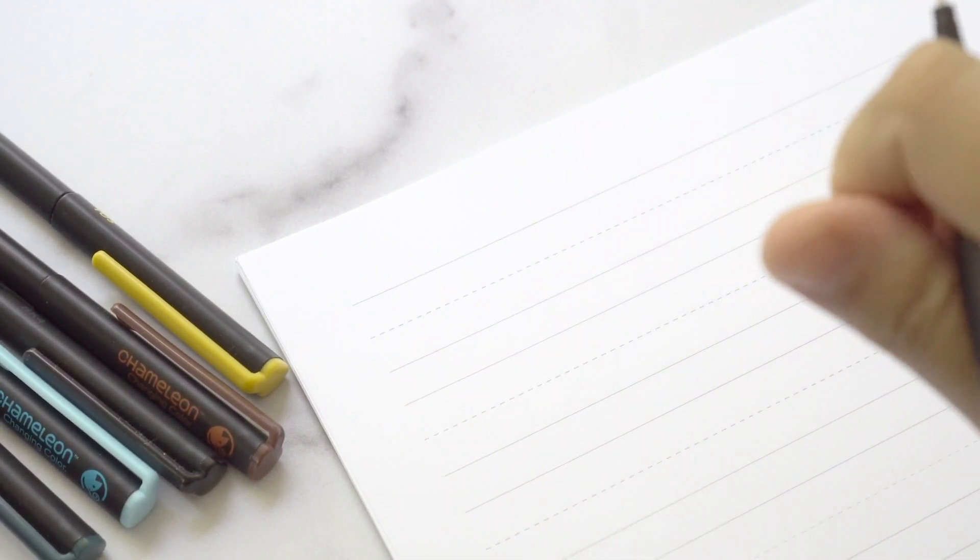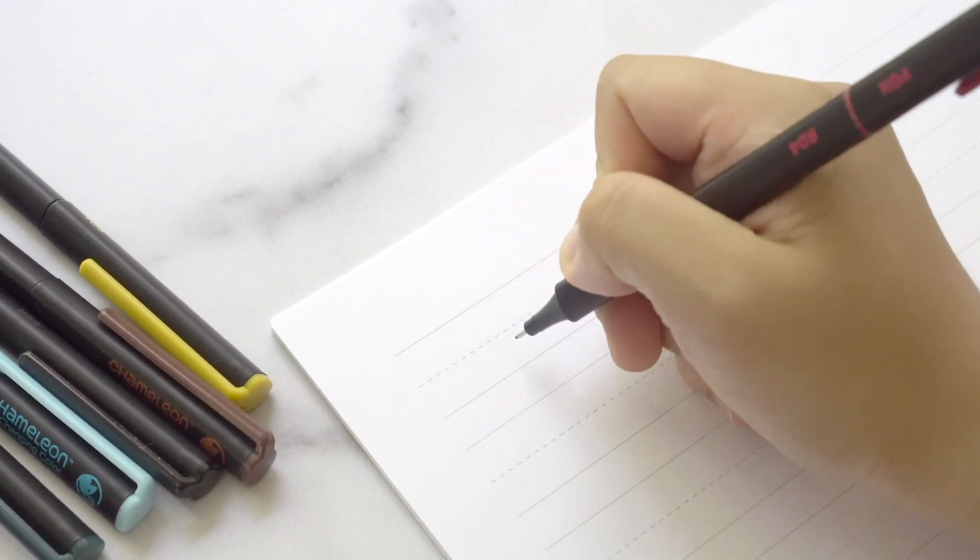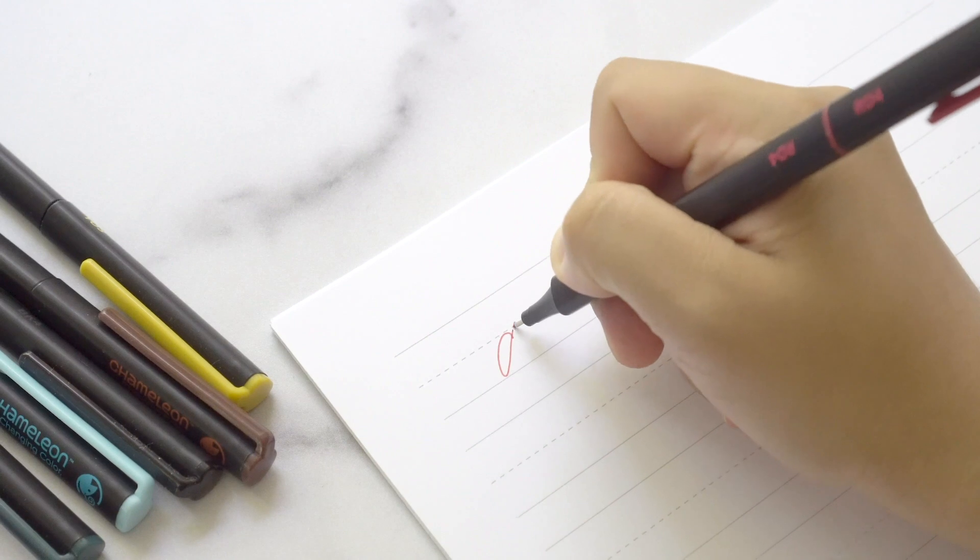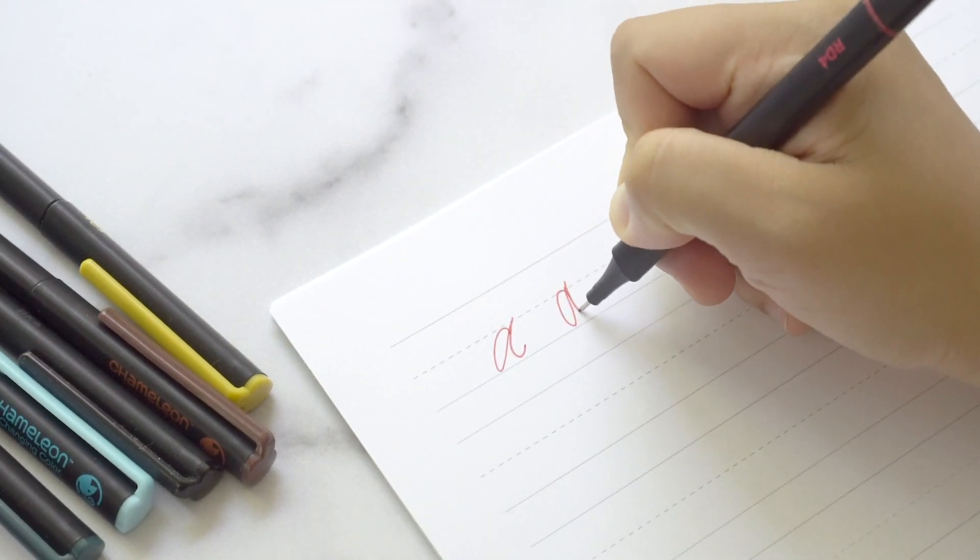With fall calligraphy, you can either have a script, meaning it's like cursive, or you can do it upright if you want to.